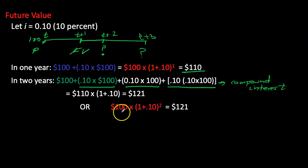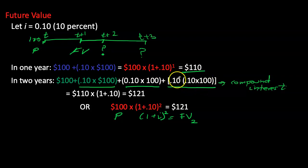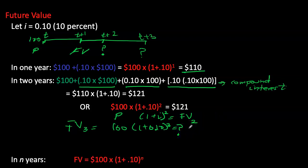This expression can be simplified as the principal amount — $100 — times (1 + i) raised to the power of 2, giving the future value after two years. Extending to three years: future value equals $100 times (1 + 10%)^3. This generalizes to the formula: FV = P × (1 + i)^n, where n is the number of years.